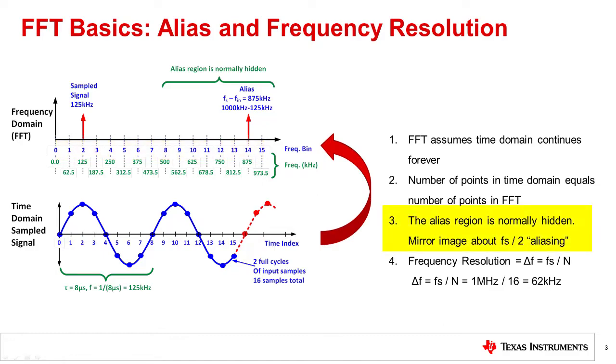Third, the FFT contains a region called the alias. The alias is a mirror image of the valid frequency region, and it occurs above the sampling frequency divided by 2. In this example, the sampling frequency is 1 megahertz, so everything above 500 kilohertz is an alias. The alias region is normally hidden as it is redundant information. We will discuss aliases more in detail later.